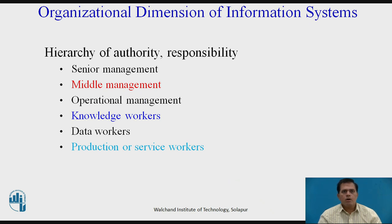In the organizational dimensions of information systems, there are hierarchies of authority and responsibilities. These hierarchies include senior management, middle management, operational management, knowledge workers, data workers, and production or service workers. Senior management are the people who actually take information from the organization and make decisions.